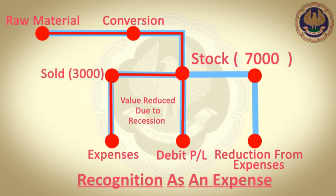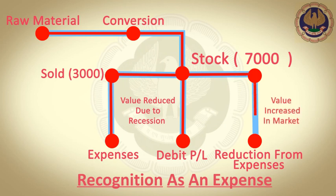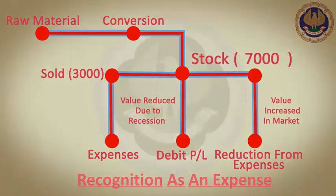The amount of any reversal of write-downs of inventories arising from an increase in net realizable value shall be recognized as a reduction in the amount of inventories recognized as an expense in the period in which the reversal occurs.